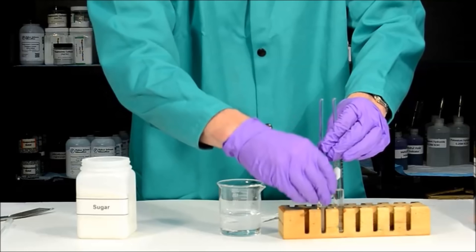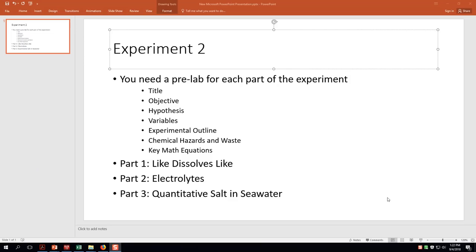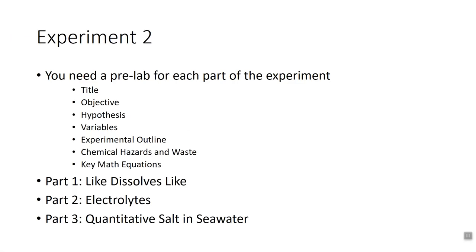Now let's look at the pre-lab for part one, like dissolves like. For the title you can use 'like dissolves like.' The objective is to test the solubility of four solutes — salt, vitamin C, sugar, and lauric acid — in two solvents: water and hexane. For the hypothesis, I strongly suggest using the lab manual (page 43). Sentence one should be a specific prediction: sugar and vitamin C should be soluble in water and not hexane; lauric acid should be soluble in hexane and not water.